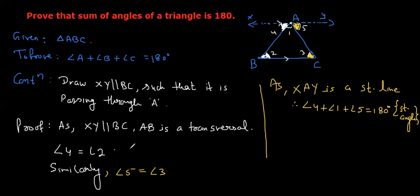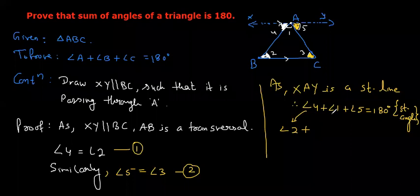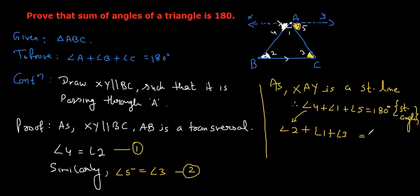4 is equal to 2. 5 is equal to 3. Can you see that 4 is equal to 2, 1 is as it is, and 5 is equal to 3. Hence proved.